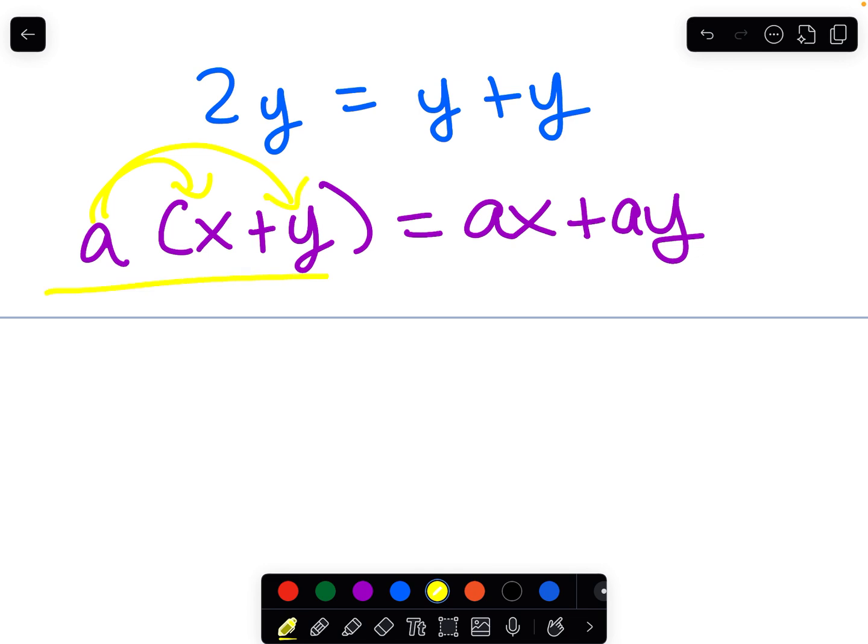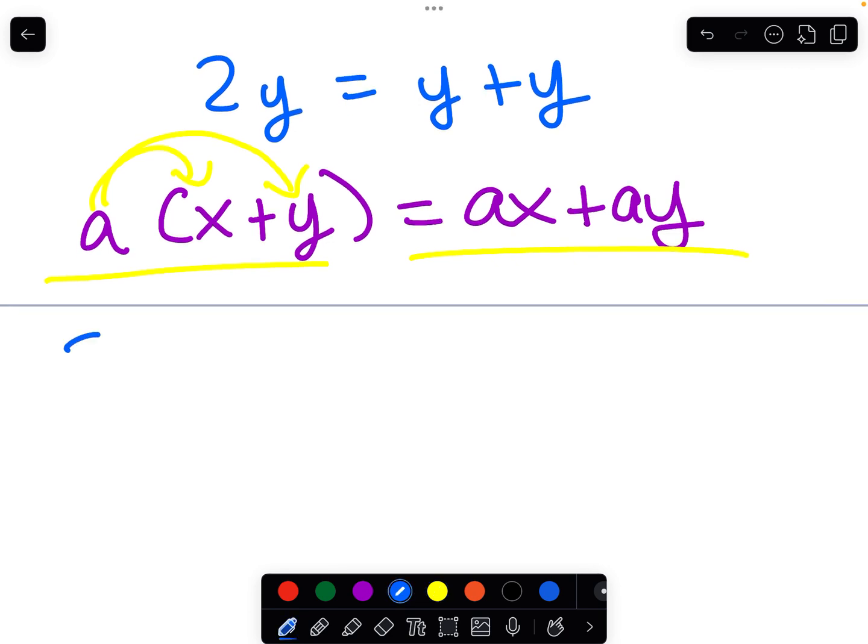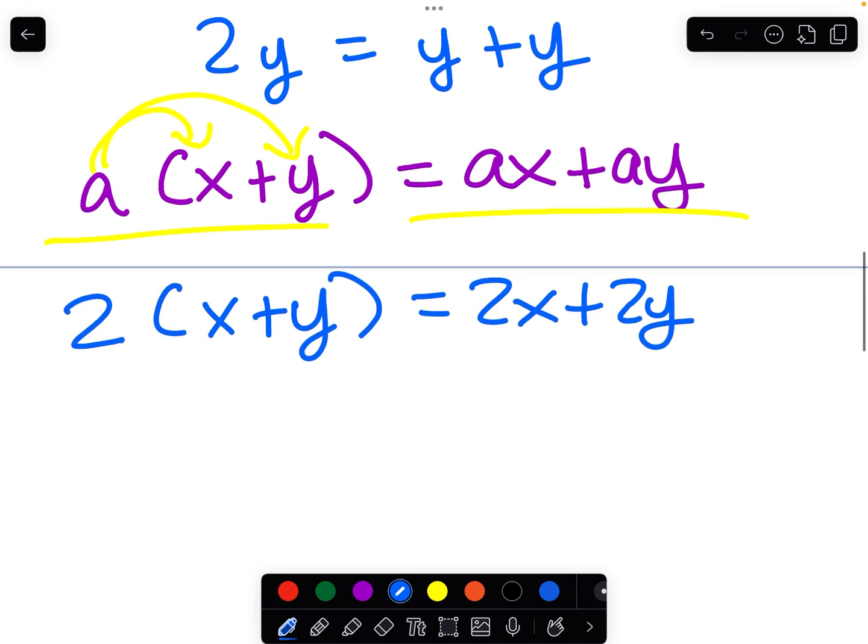And so these are equivalent expressions. Another example: two, we could say 2 times x plus y with the x plus y in parentheses equals 2x plus 2y. And if we kind of change that around, we can also say 3a plus 3b equals 3 times a plus b.